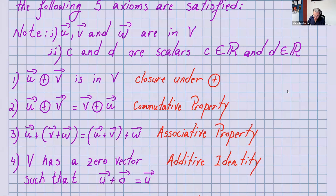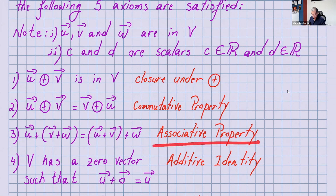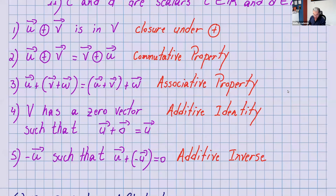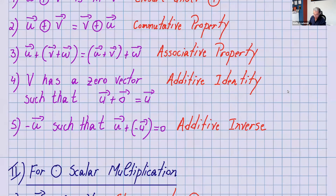The first axiom: U plus V should be in V — closure under addition. Second: U plus V equals V plus U — that's the commutative property. Third: U plus (V plus W) equals (U plus V) plus W — that's the associative property. Fourth: you must have an additive identity, the zero vector, such that U plus the zero vector equals U. Fifth: the additive inverse — negative U — such that U plus (negative U) gives you the zero vector.